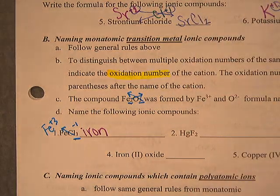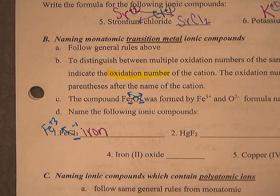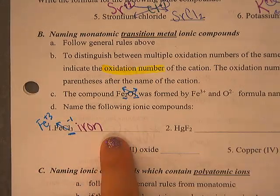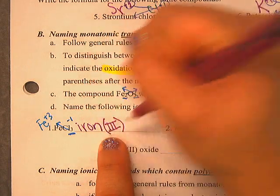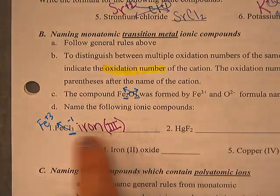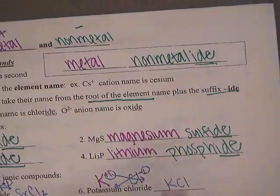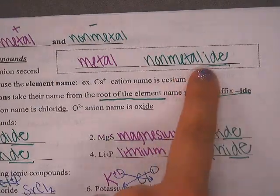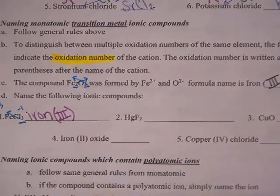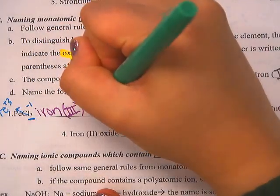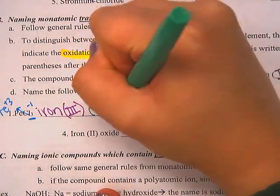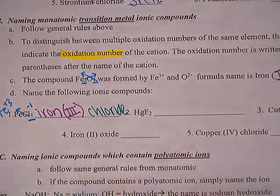Since iron is a transition metal, I need to include that plus 3 in the name as a Roman numeral — Roman numeral III. Then for the nonmetal part, I change the ending to -ide. So the nonmetal here would be chloride. The full name is Iron(III) chloride.